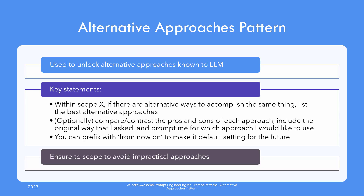It always helps to be aware of and choose the best among a carefully considered set of options. This is where the alternative approaches pattern comes into play. Large language models have learned multiple ways to solve an issue similar to the one you prompted about — you just need to unlock these alternatives. The way to go about this is to use key statements like: within scope X, if there are alternative ways to accomplish the same thing, list the best alternative approaches.